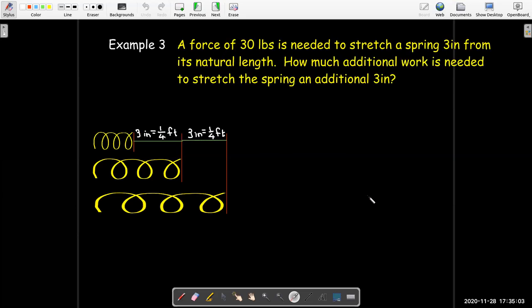All right, in our last example, we're told that a force of 30 pounds is needed to stretch a spring 3 inches from its natural length. And we'd like to calculate how much additional work is needed to stretch the spring an additional 3 inches. Well, we need to know the spring constant, and we can find that from the information that's given. Now, note that in the first sentence, we are told or given a force, a value of force.